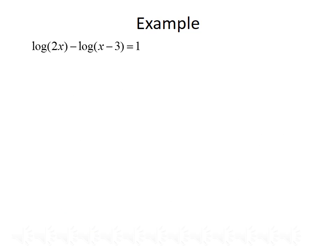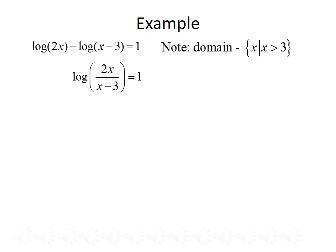Here's another example. This time we want to solve log of 2x minus log of (x minus 3) equals 1. We'll start by finding the domain. The domain for this problem is the set of x such that x is greater than 3. Then we'll go about solving for x. The first thing we need to do is combine the two logs using the quotient property. So log of 2x minus log of (x minus 3) can be rewritten as log of (2x divided by x minus 3), and that equals 1.